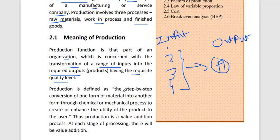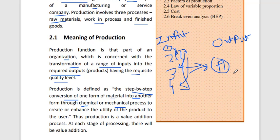Production is also defined as the step-by-step conversion of one form of material into another form through a chemical or mechanical process. First they take one raw material, combine it with a second, make a third, and step by step through chemical or other processes they create the output — making the product available to the user.